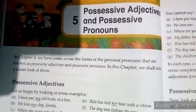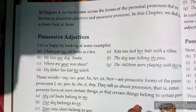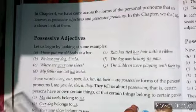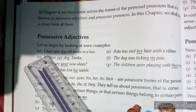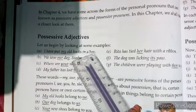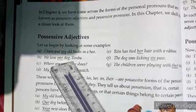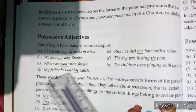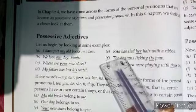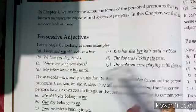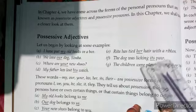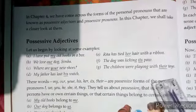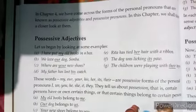Let us begin by looking at some examples of possessive adjectives. First: (a) I have put my old books in a box. We love our dog Simba. Where are your new shoes? My father has lost his watch. Rita has tied her hair with a ribbon.